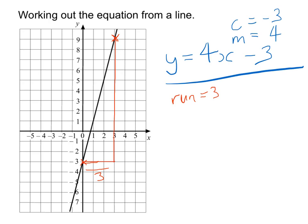And then we can see that our rise goes from negative 3 all the way up to 9, so the rise is 12. And the gradient, so the gradient m, is just going to be the rise divided by the run. So 12 divided by 3 gives us the gradient of 4. And just as before, the intercept we're seeing where it crosses the y-axis, and that is negative 3. Therefore the equation y is equal to 4x minus 3.